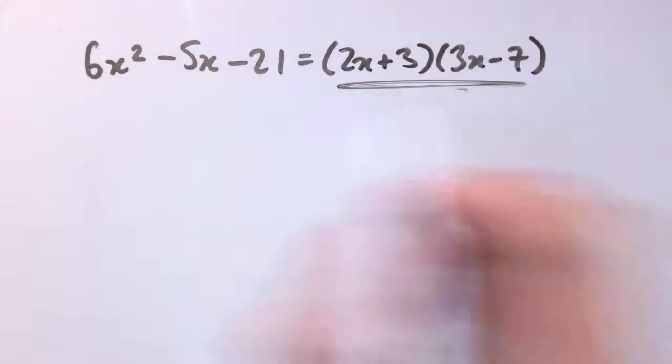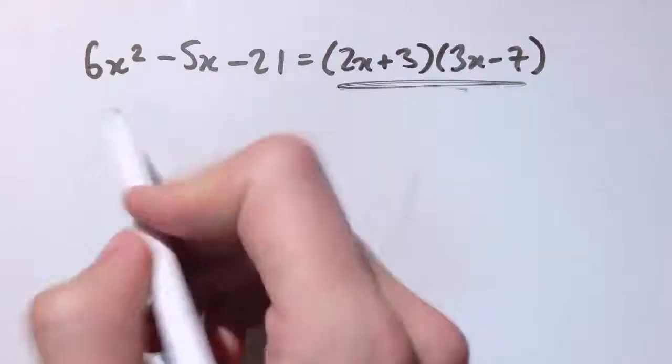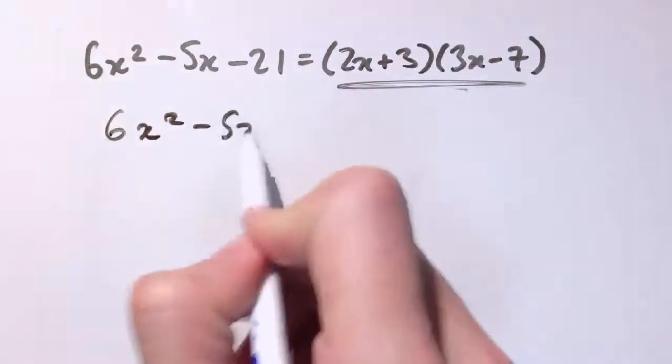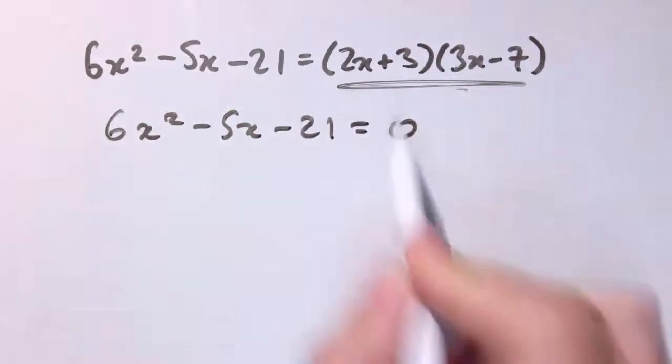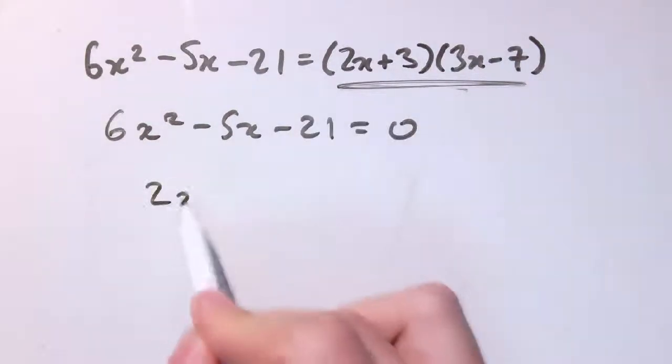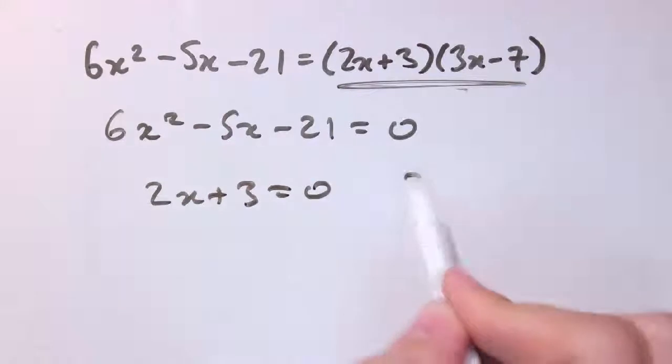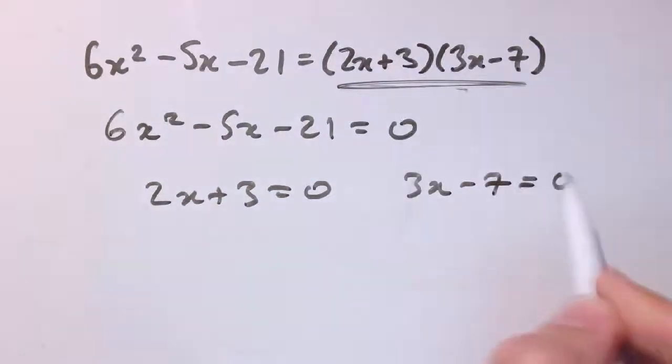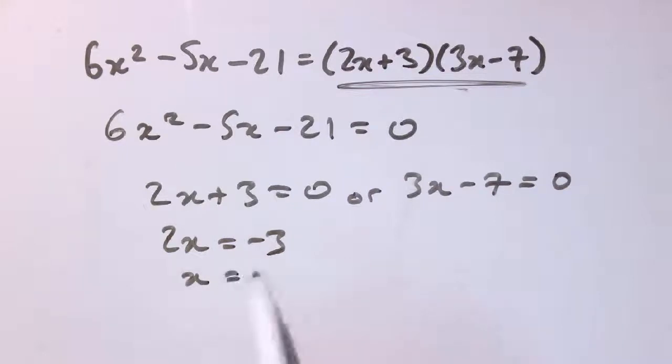If I want to solve this equals zero, then I either have 2x plus 3 equals zero or 3x minus 7 equals zero. So I get 2x equals minus 3, so x equals minus 3 over 2, or 3x equals 7, so x equals 7 thirds.